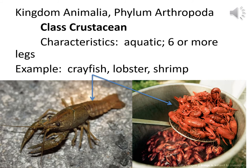Crayfish, lobster, shrimp, etc. are all in Class Crustacea, which makes them crustaceans. The characteristics would be aquatic and six or more legs. If you look at the little crayfish on the left, you can see a whole bunch of legs, plus claws, plus swimmerets underneath — he's got more than six legs, he's aquatic, and he's good eating.